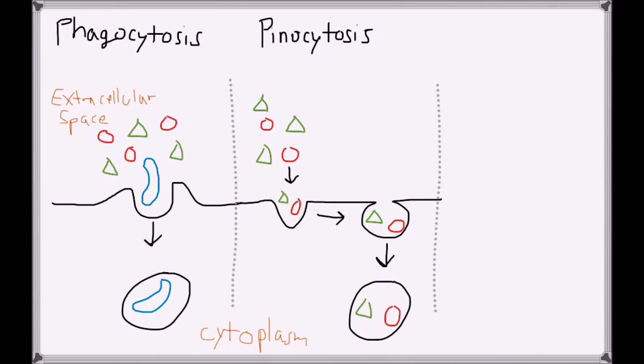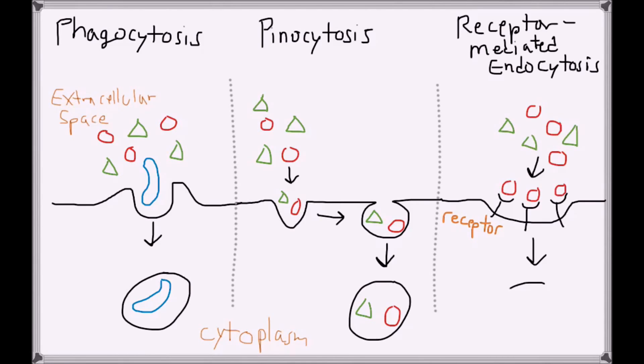The third type of endocytosis is termed receptor-mediated endocytosis, which results from specific molecules binding to receptors integrated within the plasma membrane. A high concentration of bound molecules induces vesicle formation and movement into the cytoplasm. Thus, receptor-mediated endocytosis is highly selective and concentrates cargo that will be taken up into the cell.